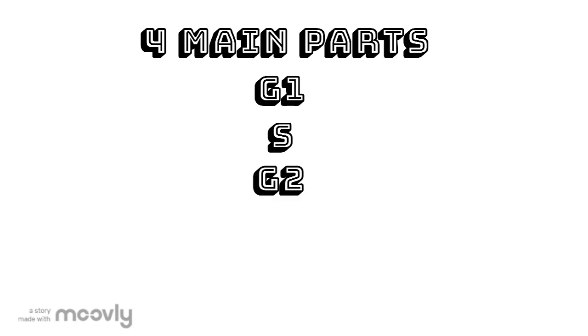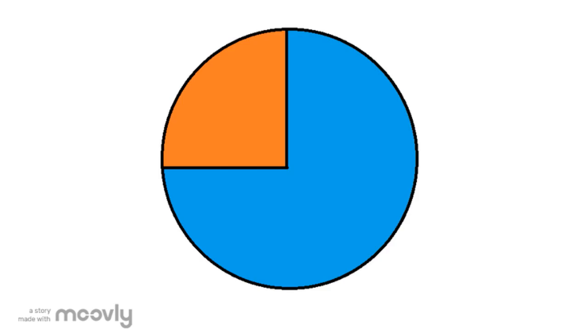The cell cycle has four main parts: G1, S, G2, and M phases. There's also a G0 phase, but that is where the cell cycle is arrested. There are two main parts of the cell cycle: interphase and mitosis.